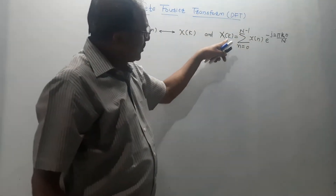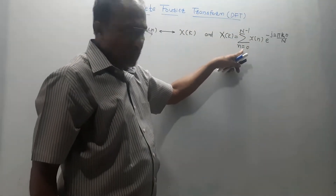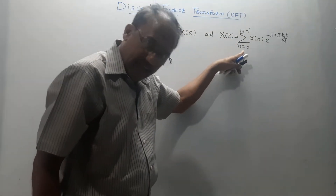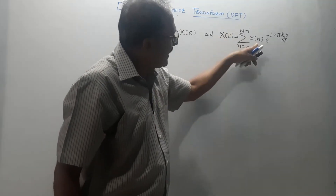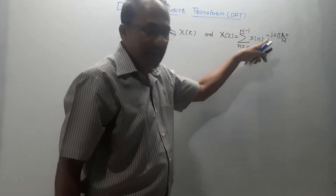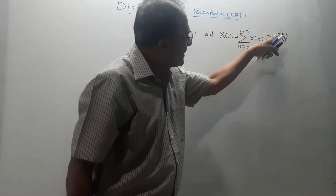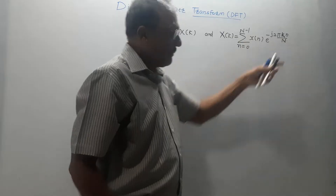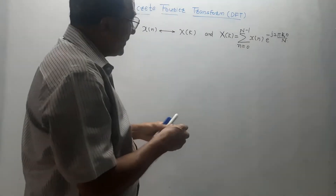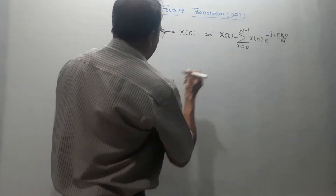The mathematical equation is X of K equals summation from n equals 0 to N minus 1 of X of n, e raised to minus j 2 pi K n upon capital N. What this N indicates: